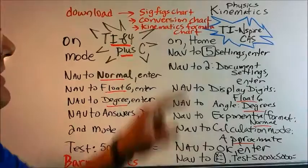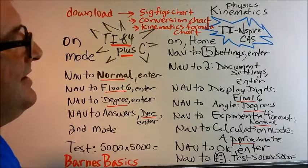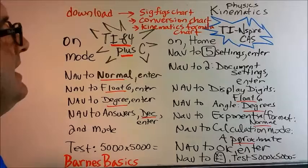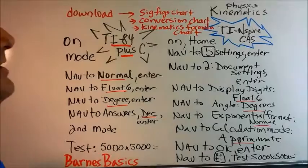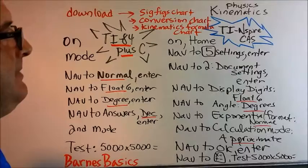As well, I would like you to download a significant figures chart from the internet, print something out on that. A conversions chart, in other words, metric to metric and maybe metric to English, English to metric. 1,000 meters is equal to 1 kilometer, 1,609 meters is in 1 mile, that kind of chart.